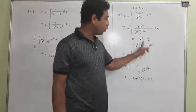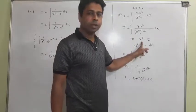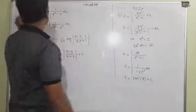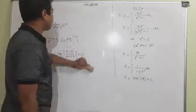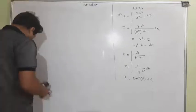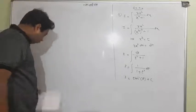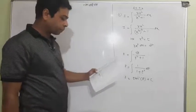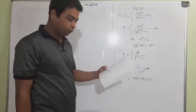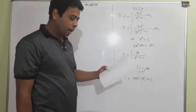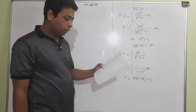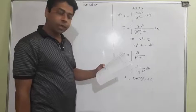The result is arctan t plus C. Substitute back t equal to x cubed for your final answer. Very similar questions are numbers five and six of the exercise — those are your job.